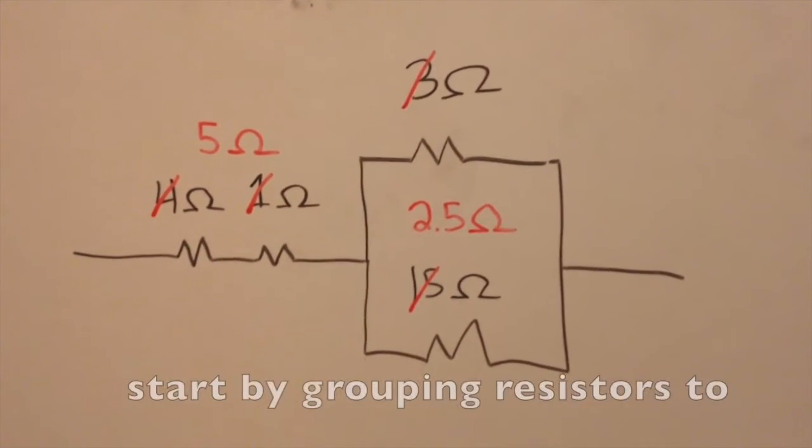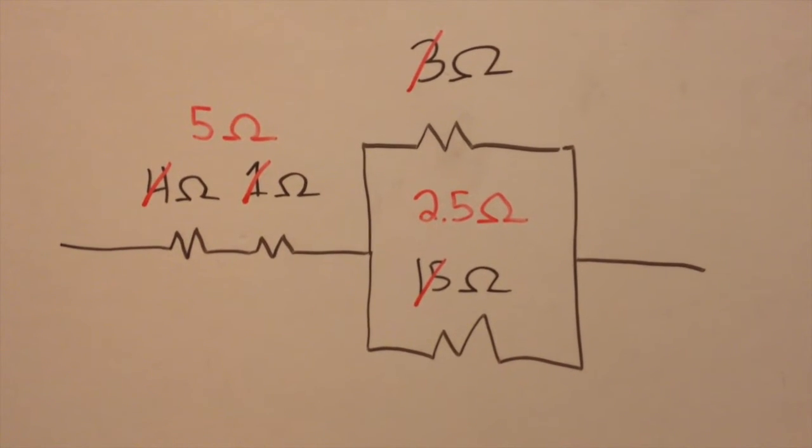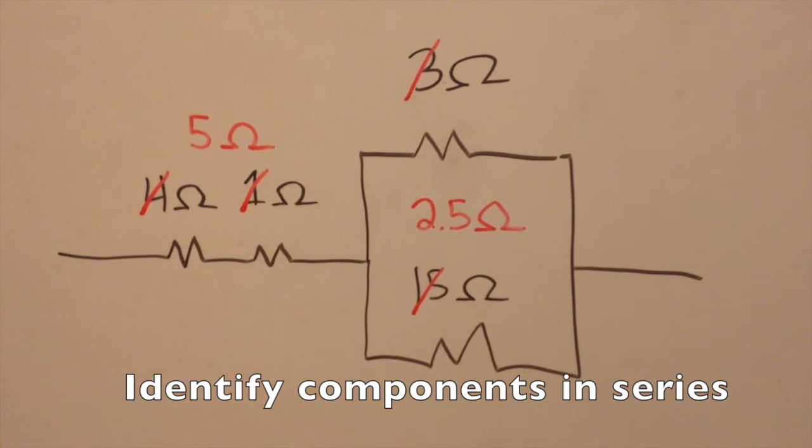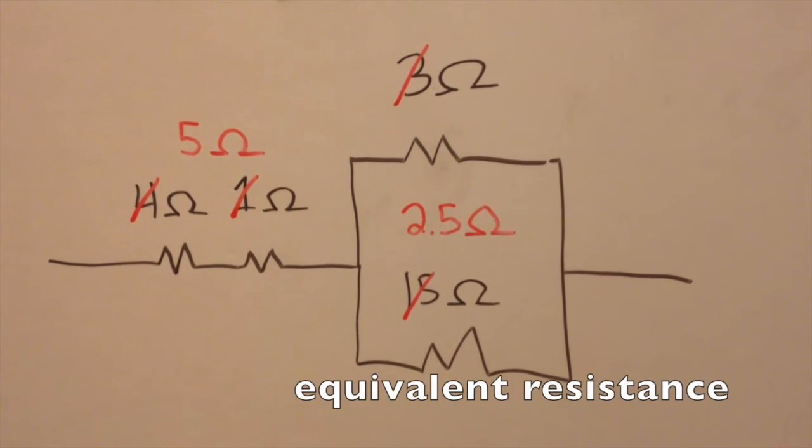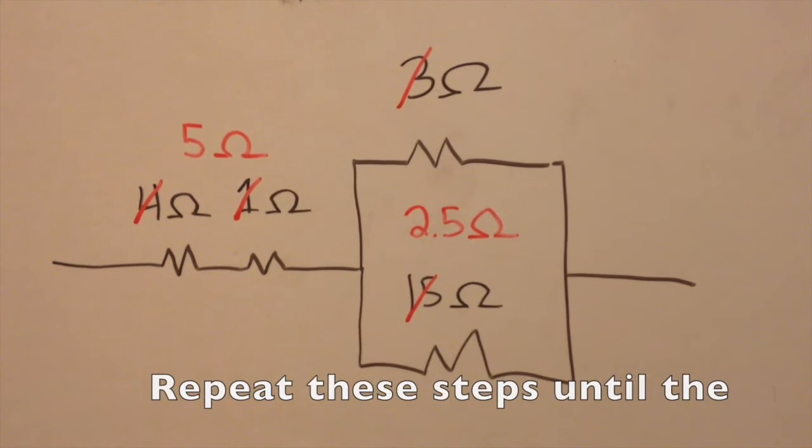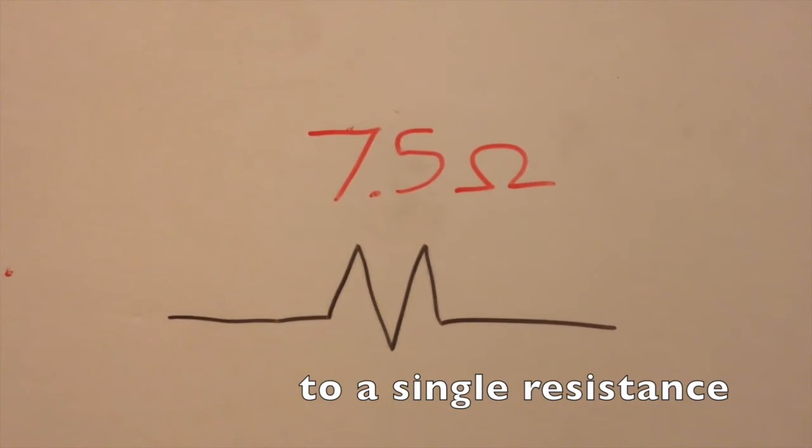Define equal resistance. Start by grouping resistors to one line. Identify components in series and parallel to calculate equivalent resistance. Repeat these steps till the circuit is reduced to a single resistance.